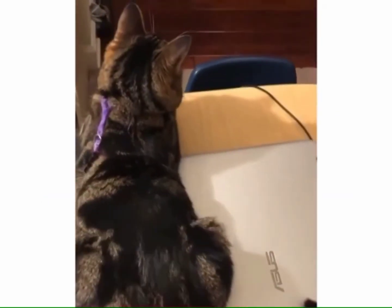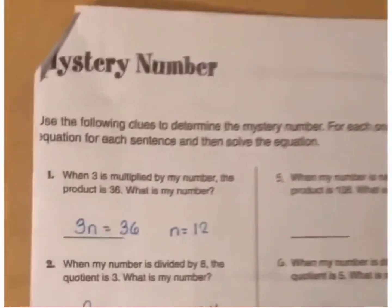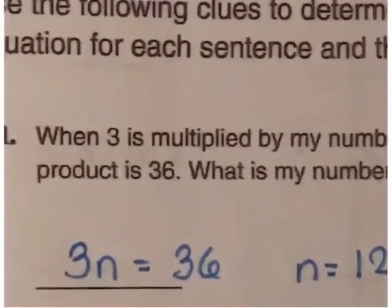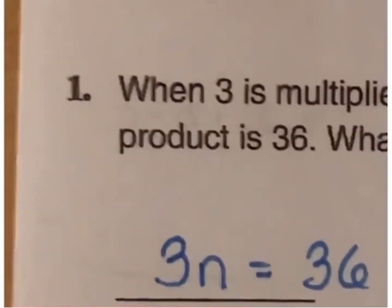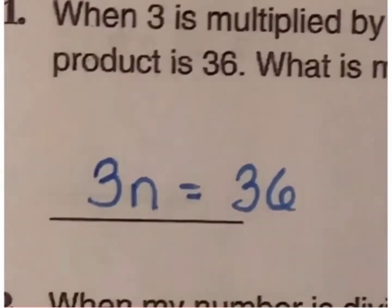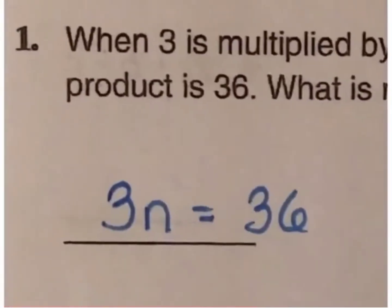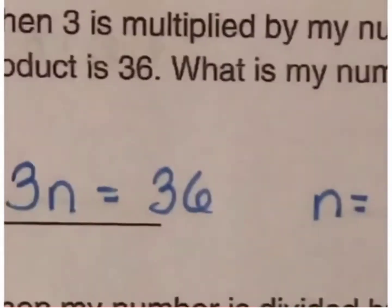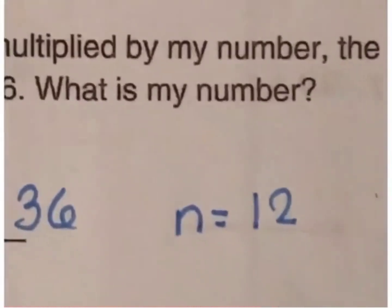Check out my sweet teaching companion right here. On number 1, it says, when 3 is multiplied by my number, so 3 times n, the product is 36. So, 3 times n equals 36. Solve for n, n equals 12.